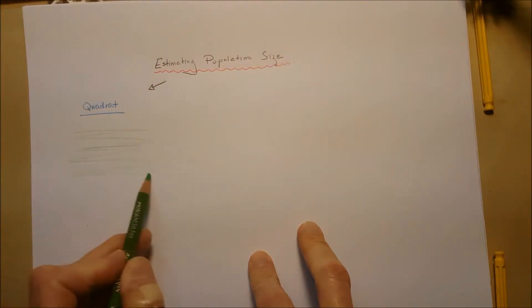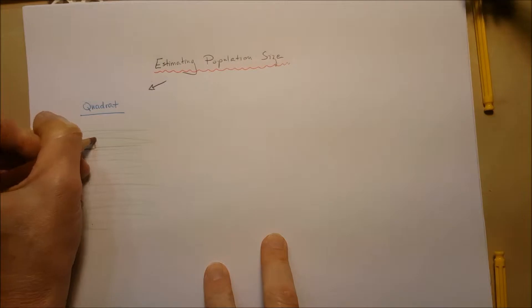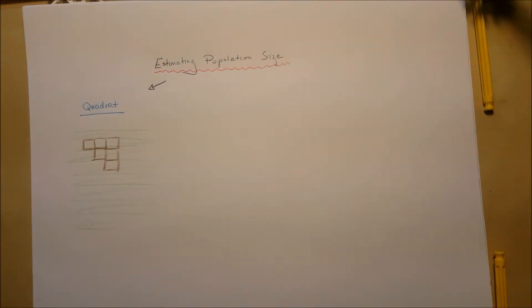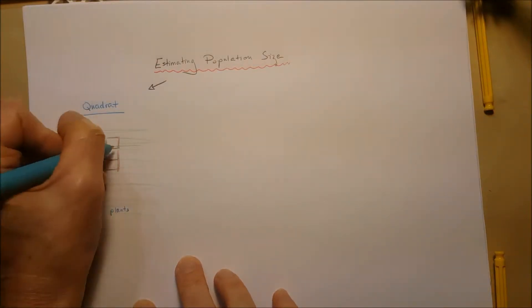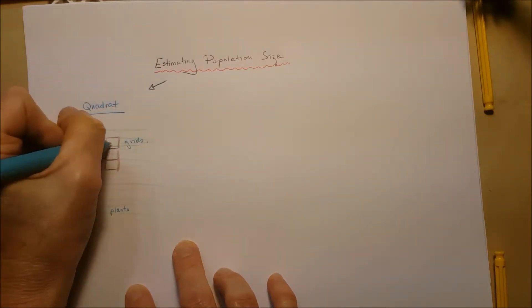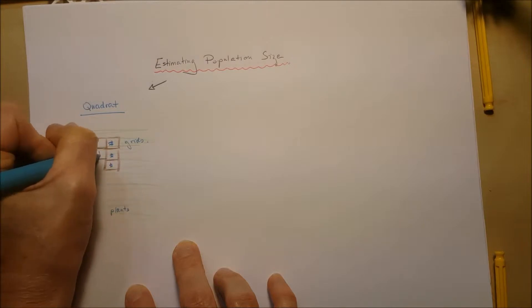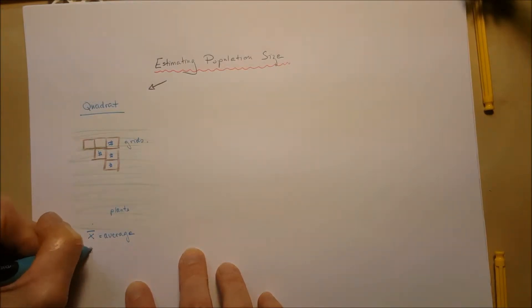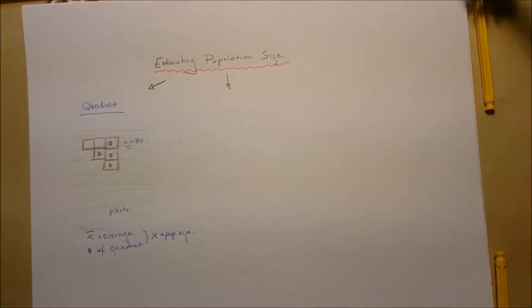With the quadrat method, we have, for example, a large meadow, an area with plants — non-motile organisms. We place quadrats of a certain size on the meadow or on the ground. We find the number of organisms in each quadrat, figure out the average number per quadrat for the certain organisms, multiply by the number of quadrats, and determine the population size of that organism over that area.